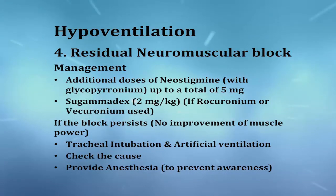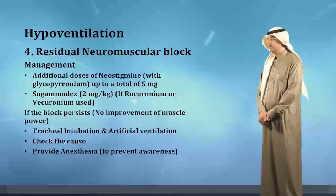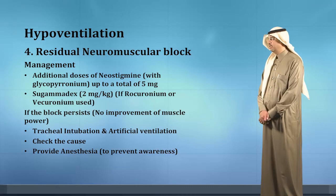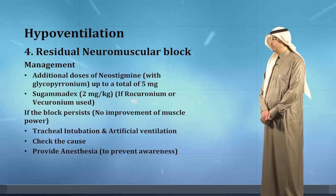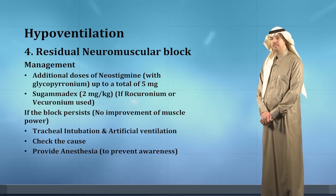Management includes additional doses of neostigmine up to a total of 5 milligrams. In the case of rocuronium or vecuronium use, sugammadex at 2 mg per kilogram may be used instead. If the block persists and there is no improvement in muscle power, it is best to resort to tracheal intubation and artificial ventilation to evaluate the cause and provide anesthesia to prevent any awareness.